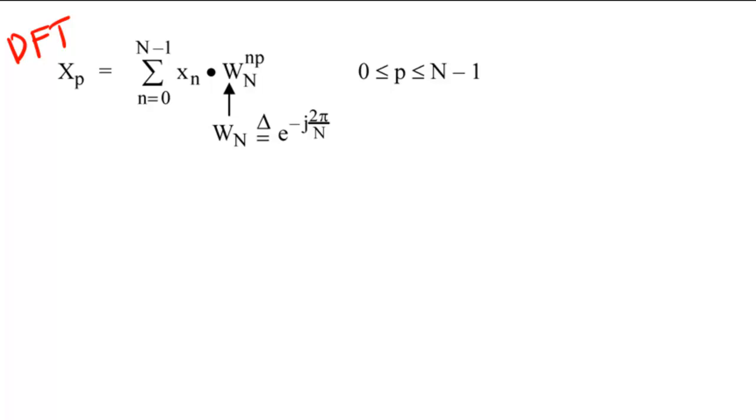Therefore, we often measure the speed of a signal processing operation in terms of multiply accumulates. If we were to calculate the DFT in a straightforward fashion, we would need to perform n multiply accumulates n times.